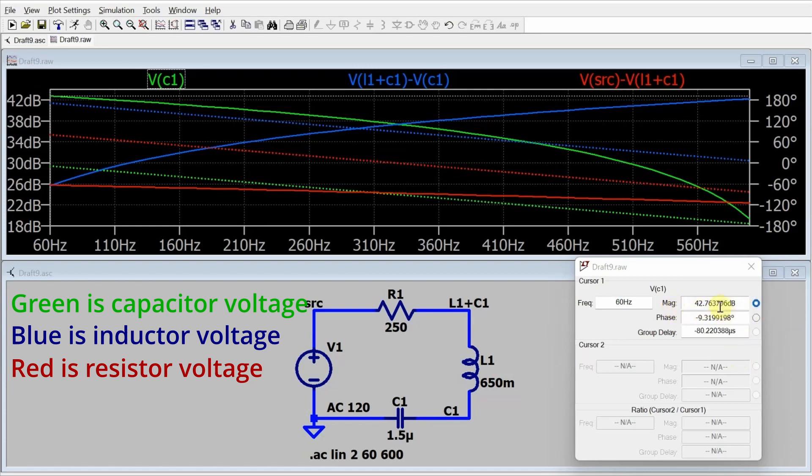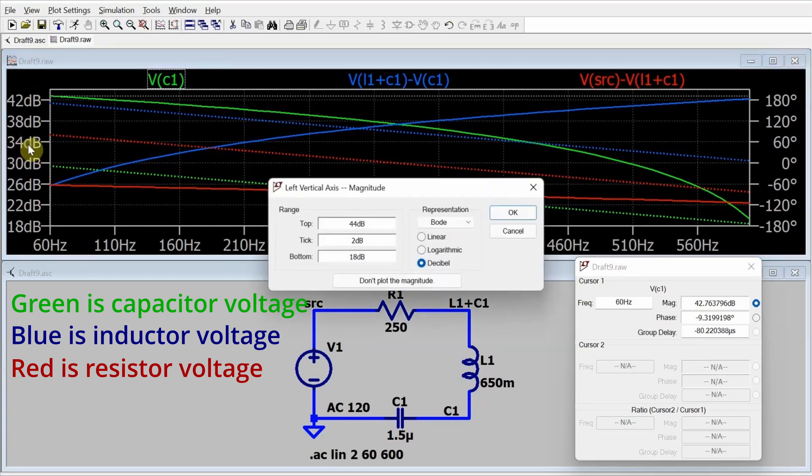Now you'll notice that the magnitude is in dB or more precisely as dBV. I can actually change that. So it's giving me a measurement in voltage. If I go over here to the vertical axis where it's giving me all these measurements in dB and I right click over there, I can select linear, logarithmic, or decibel.